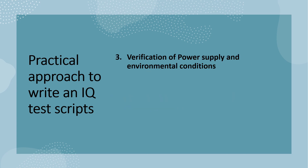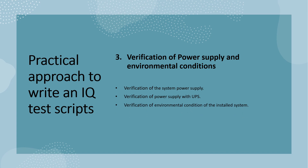The third test script is for the verification of power supply and environmental conditions where the system has been installed. First, verification of system power supply — that the system is connected with a well-established power supply. Next is verification of power supply with UPS, that is uninterrupted power supply, so that if the power goes there should be no impact on the running system. Next is verification of environmental conditions — that the system is installed in a controlled temperature and relative humidity environment.